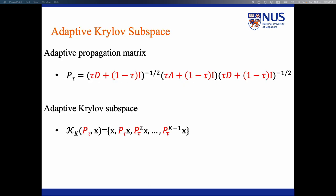By introducing a parameter tau in the propagation matrix P, we propose an adaptive propagation matrix P_tau defined in this equation. And by utilizing P_tau, we propose adaptive Krylov subspace.